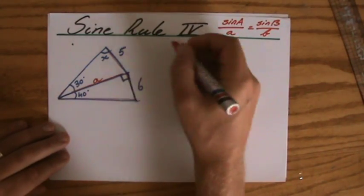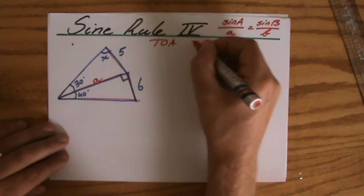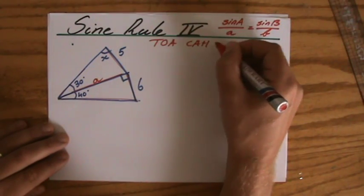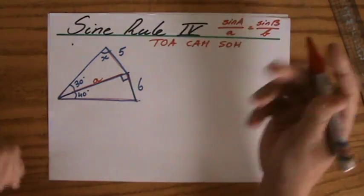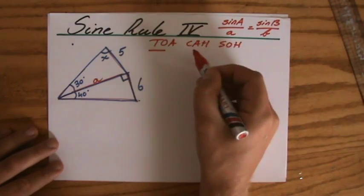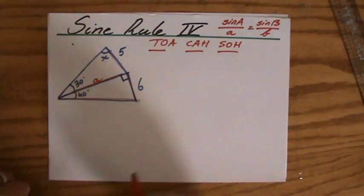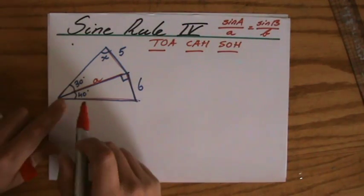Let's write down TOA CAH SOH, or SOH CAH TOA - whatever you teach, whatever book you use. You write it down for ordinary trigonometry. If I stand at my angle, I'm going to rotate a little bit.